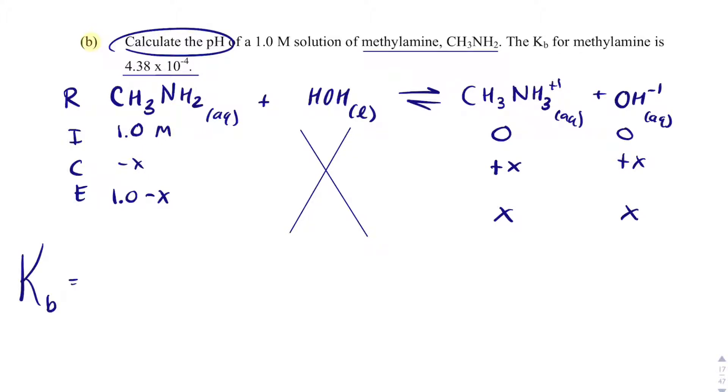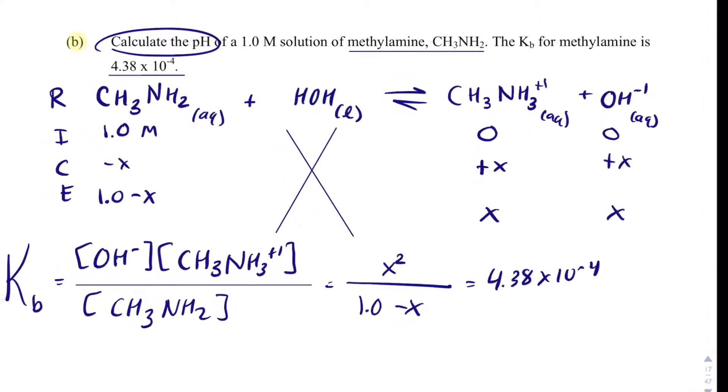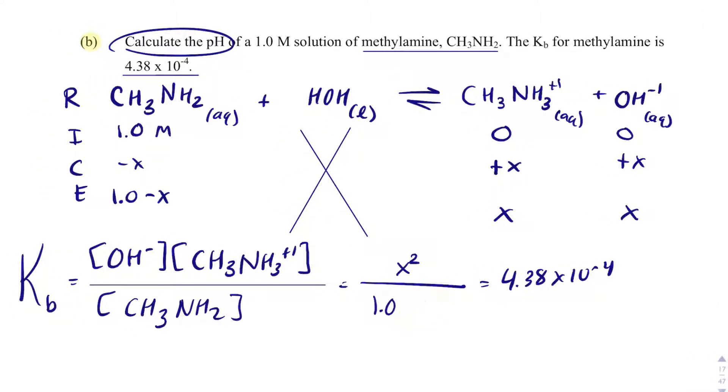So my KB, which I can use because I have hydroxide, is equal to hydroxide times the conjugate acid, CH3, NH3 plus 1, divided by my methyl amine, which I started with. And then I'm going to plug in what I know. And I have X times X divided by 1.0 minus X. That equals 4.38 times 10 to the minus 4. And then I can make life a little bit easier. X times X is X squared. I can do the 5% rule here, get rid of the minus X. And then really the 1, when I solve for X, is going to multiply each side by 1. And so that actually goes away.